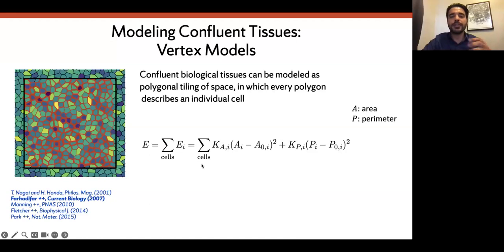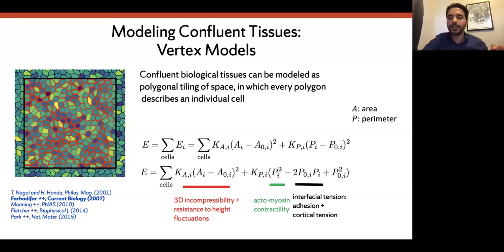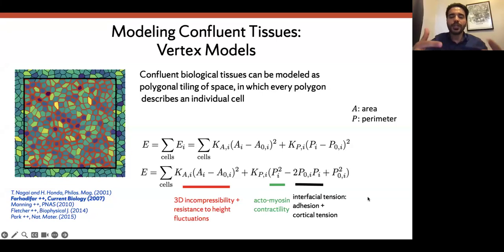In the vertex model, the elastic energy is a summation over all cells with two main contributions: area elasticity and perimeter elasticity. We have an area stiffness, the cell area, a target area, perimeter stiffness, perimeter, and target perimeter. This model has microscopic origins: area elasticity is related to 3D incompressibility of the tissue layer; the p² term is related to actomyosin contractility; and the linear term is related to interfacial tension. The physical degrees of freedom are just the vertex coordinates.